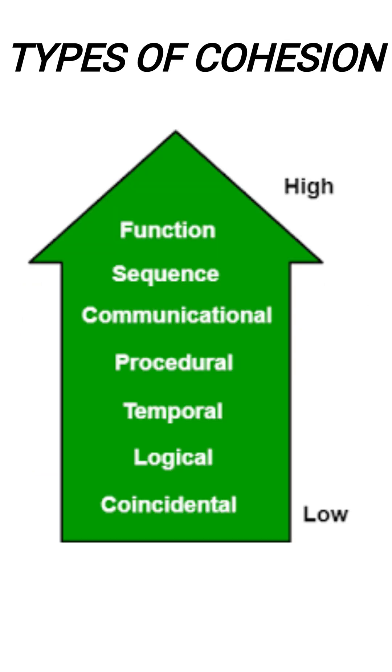Now these are the types of cohesion which you can see in the figure. Functional cohesion being the highest and coincidental cohesion being the lowest among them.